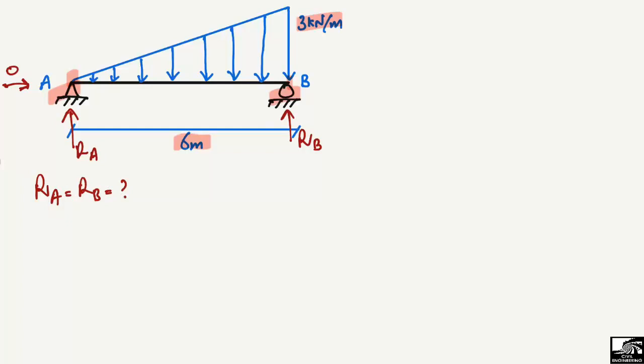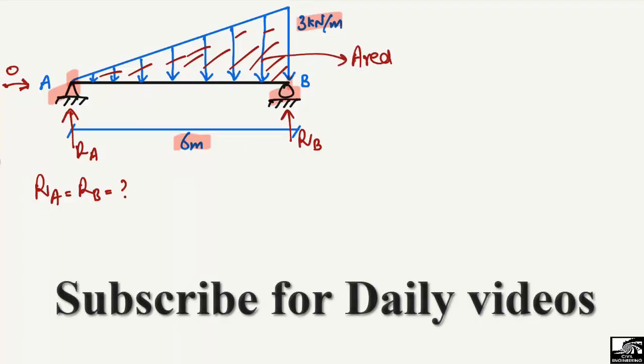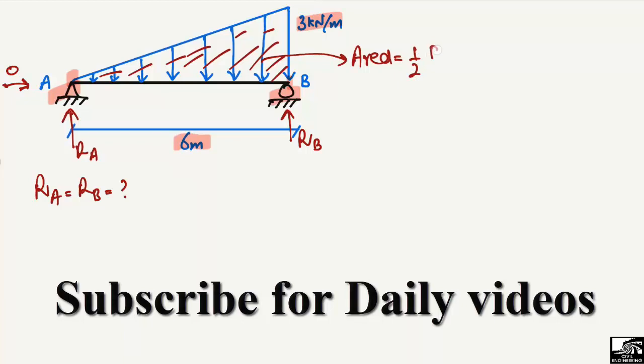The first step is to find out the total load acting on this beam. To do this, we take the area of the load acting on the beam. This is a triangular area, so we find the area of this triangular load. The area will give us the equivalent point load acting on this beam.